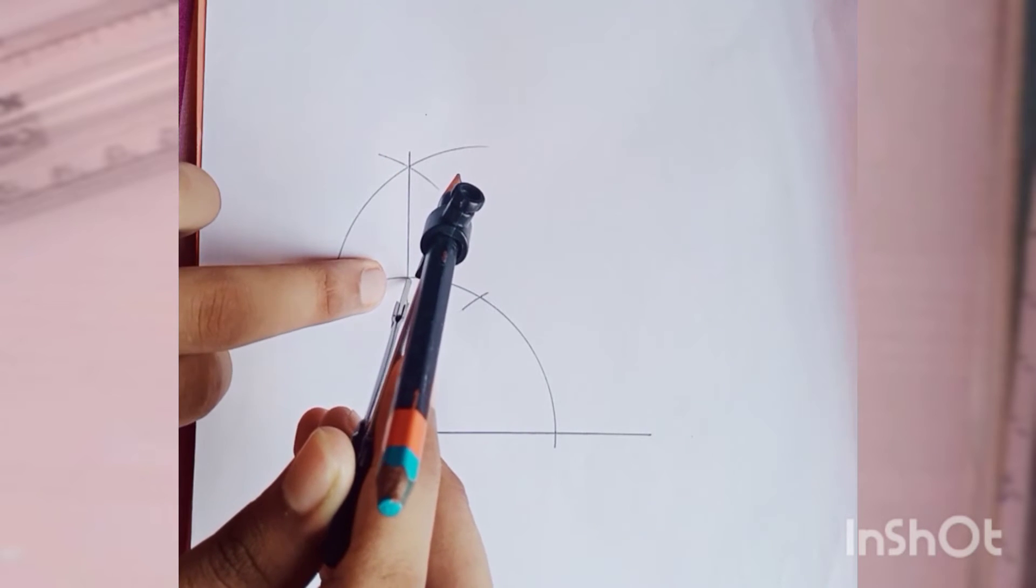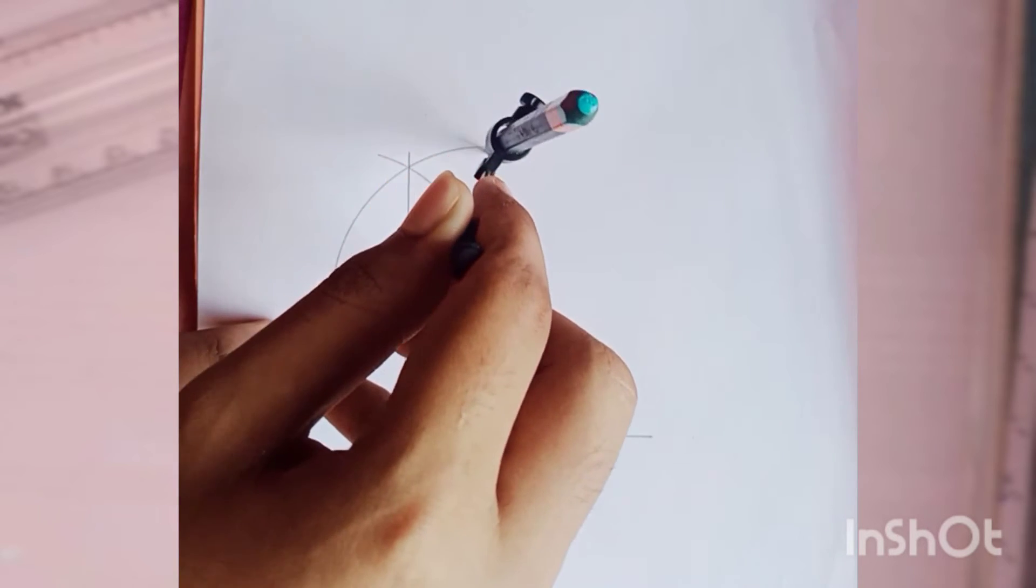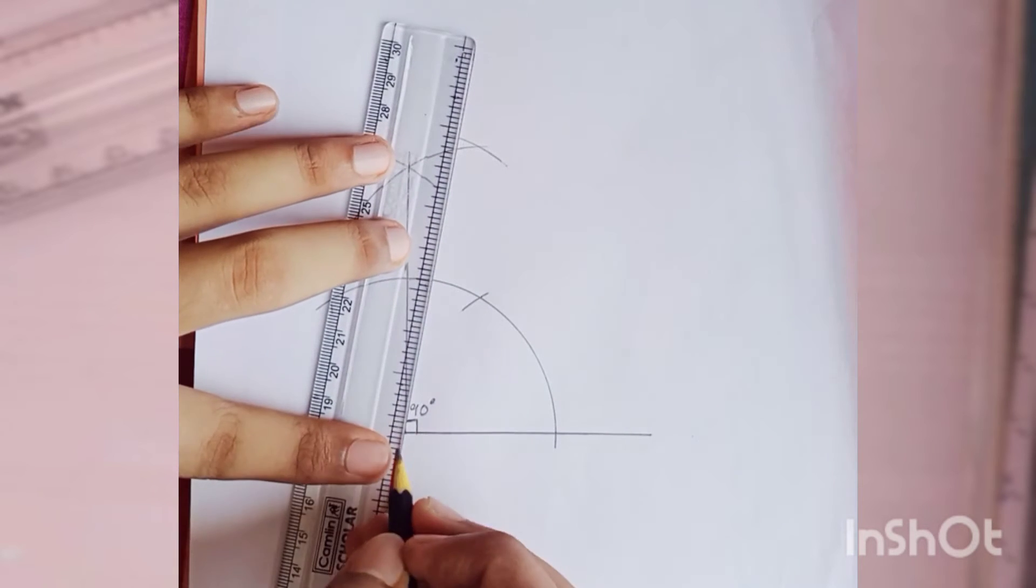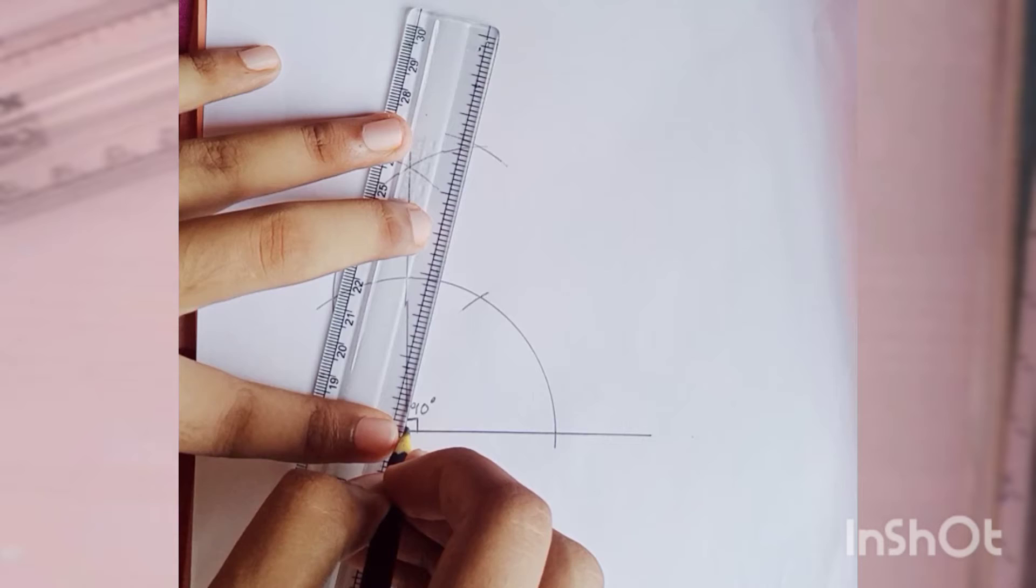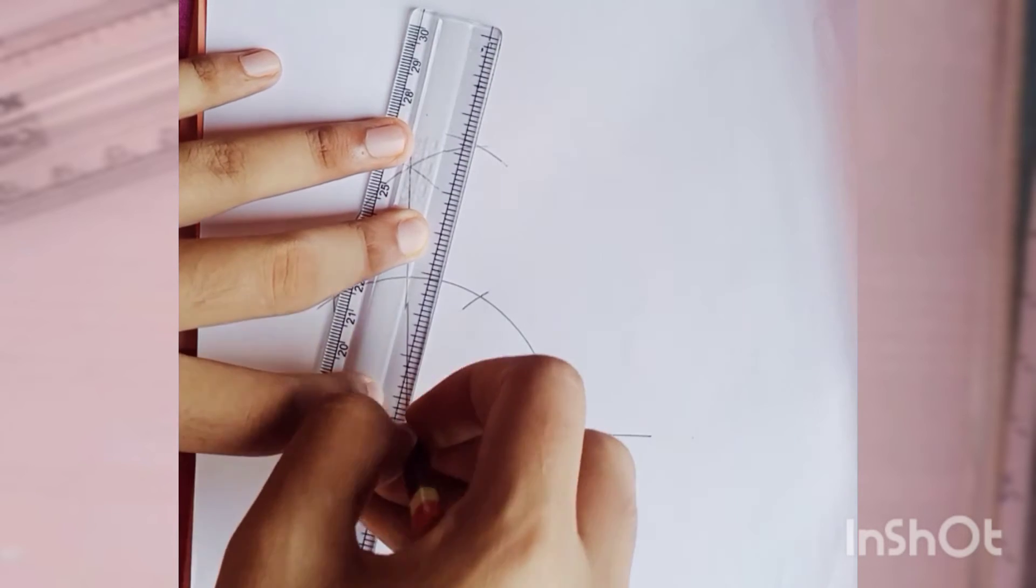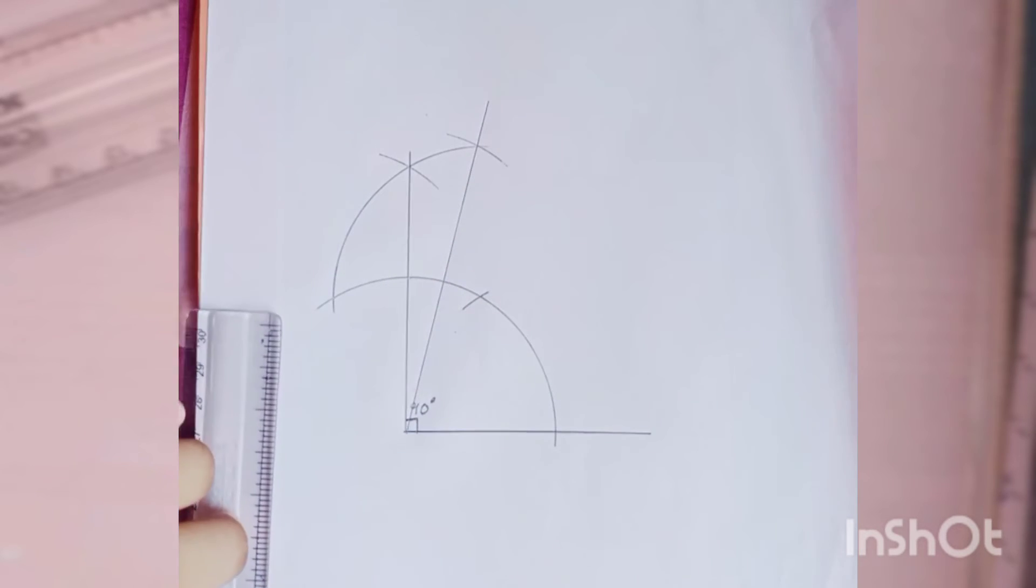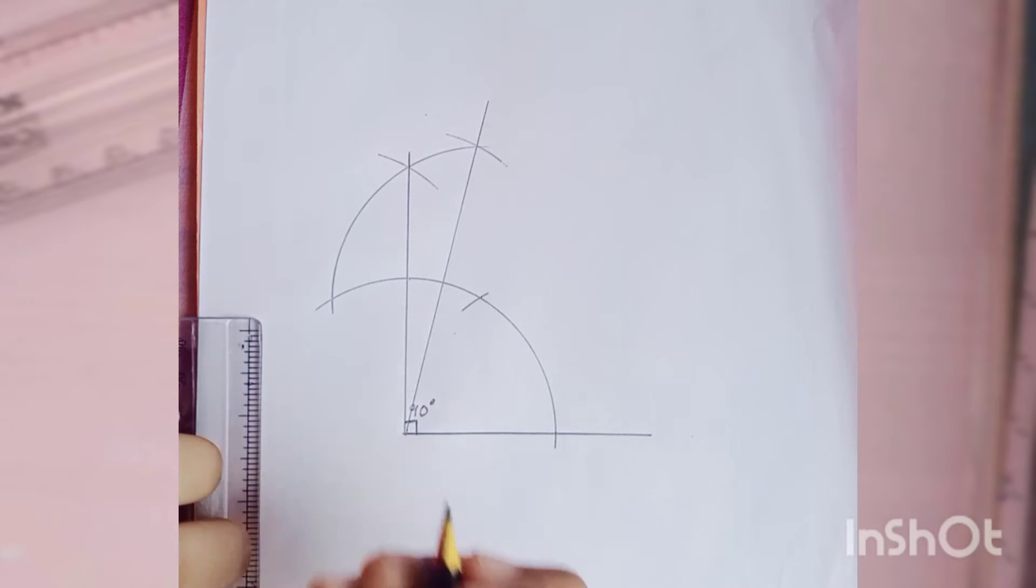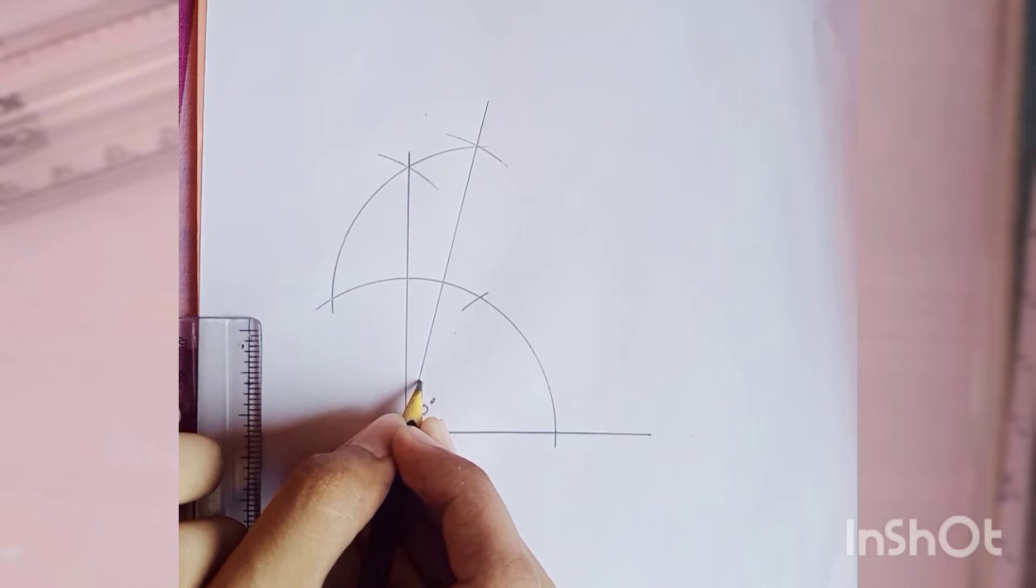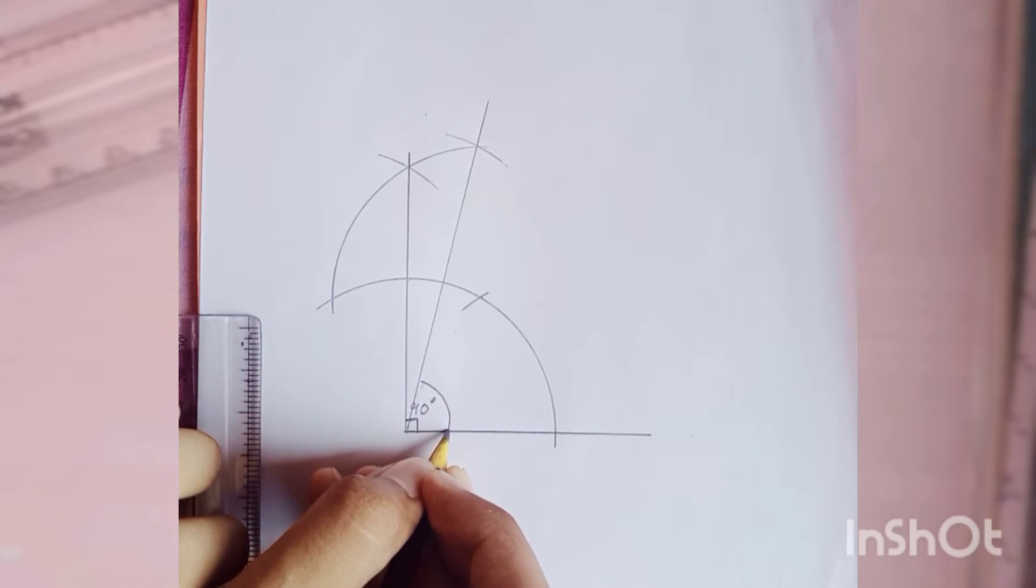from this side we cut another arc here. So from here we draw another line. So this will make 75 degrees. This whole part is 75 degrees.